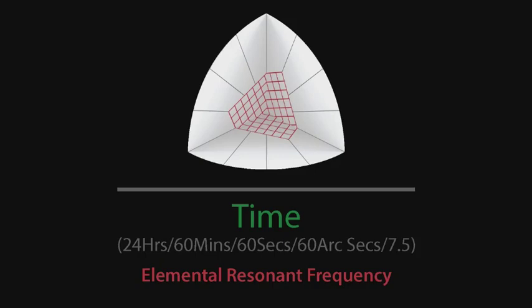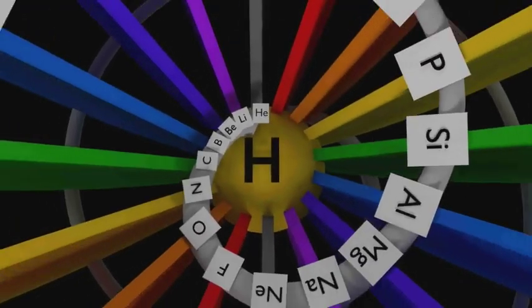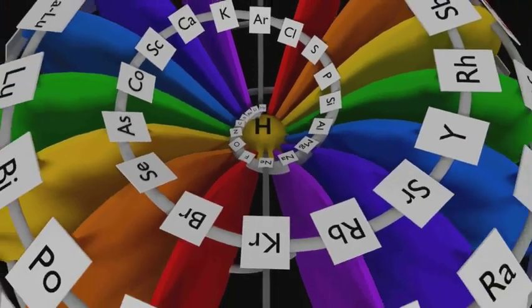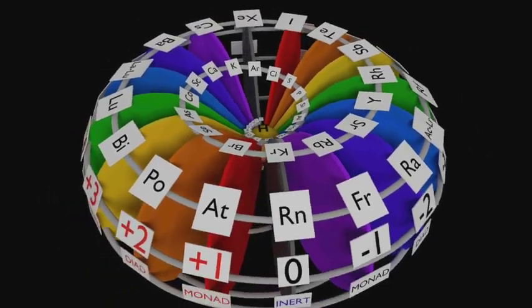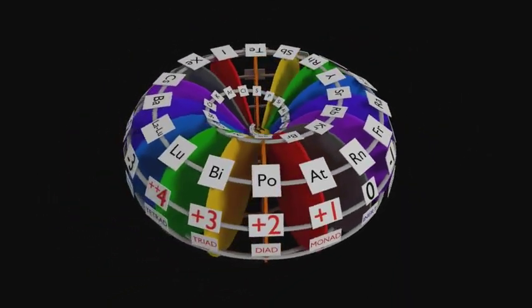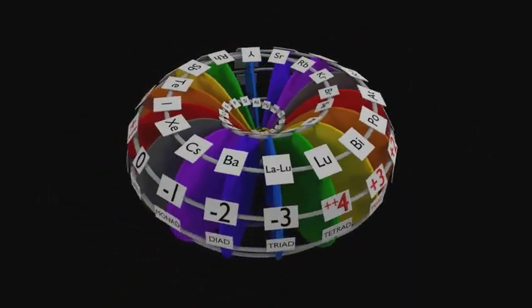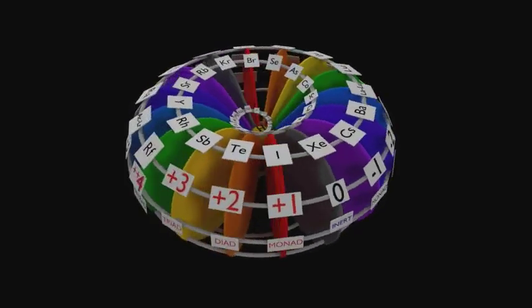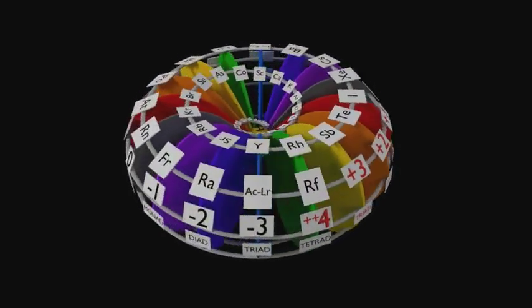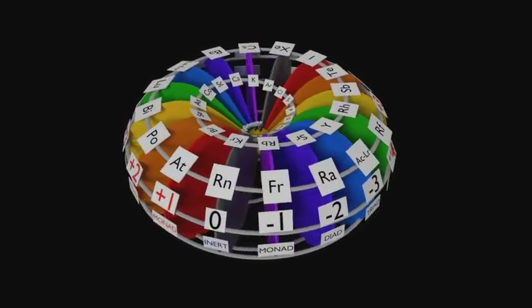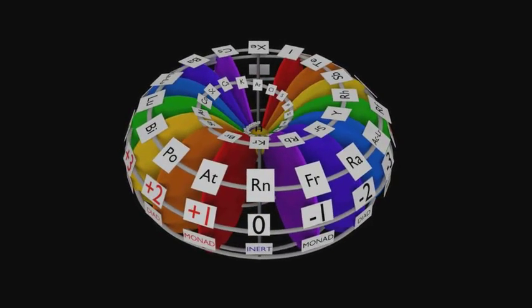This is important because once you know the resonant frequency of an element, you have the metric with which to manipulate matter, as demonstrated by the figures of Chladni. When all the elemental nodes are plotted according to their valences, the elements correctly align to their base frequencies. These base frequencies, which are also defined by sound and color, are indicated for each of the eight planes of the model.